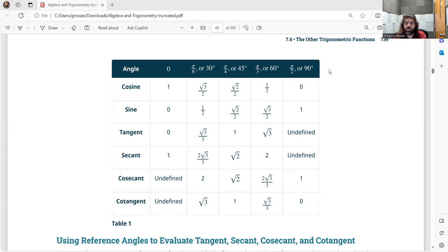The textbook gives you a table for pi over 6, pi over 4, and pi over 3. Also for 0 and pi over 2. Or using degrees, 0, 30, 45, 60, 90.